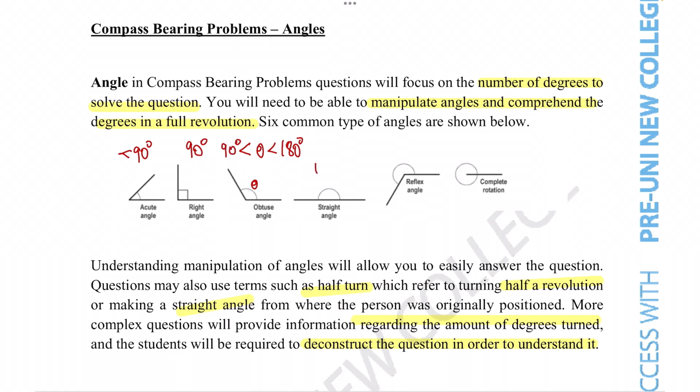In a straight angle, the angle has to be exactly 180 degrees. For reflex angles, the degree has to be less than 270 but more than 180.